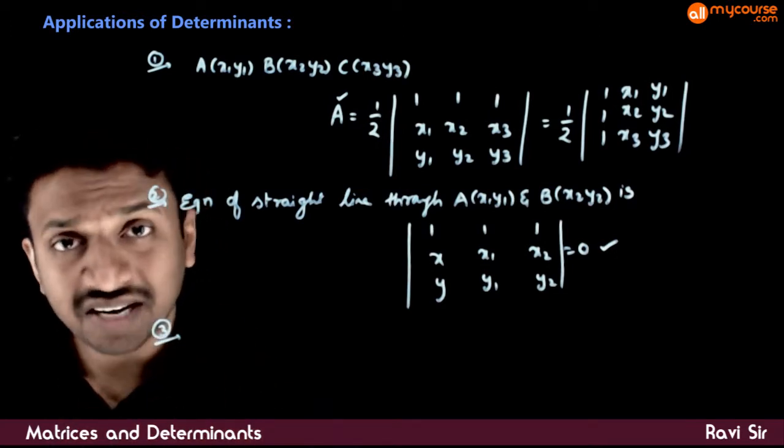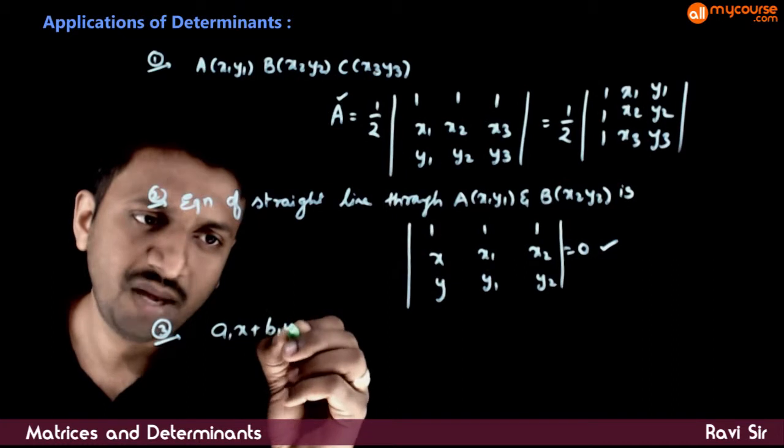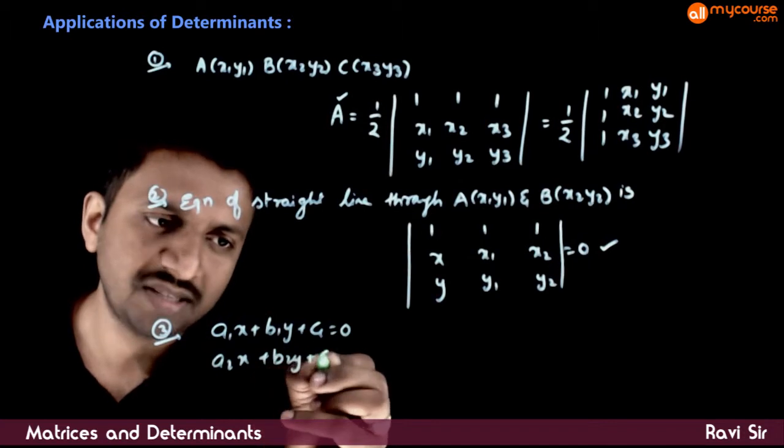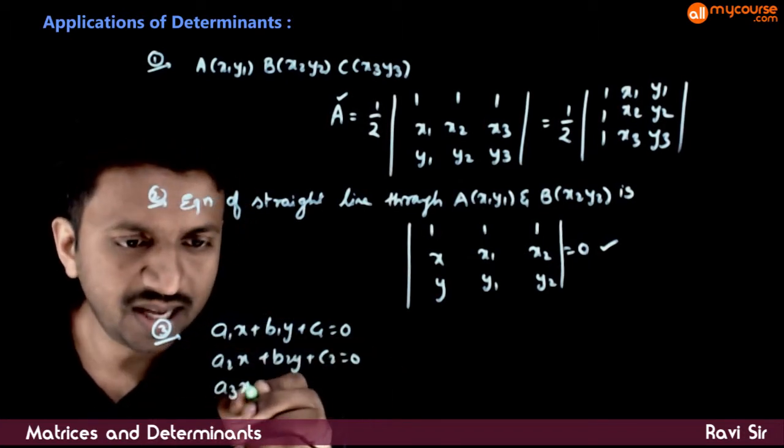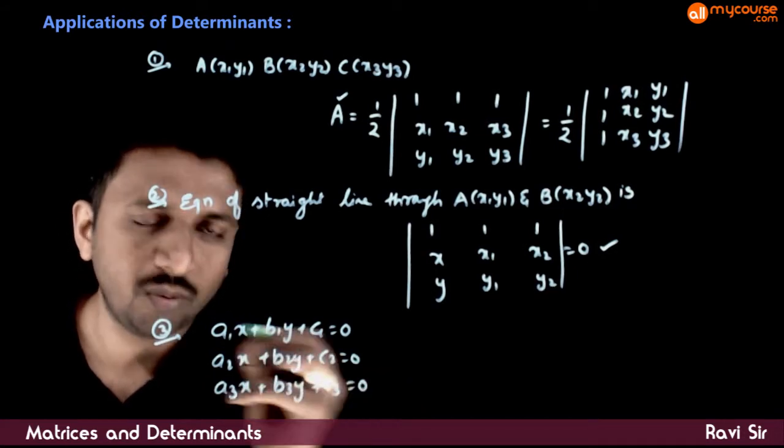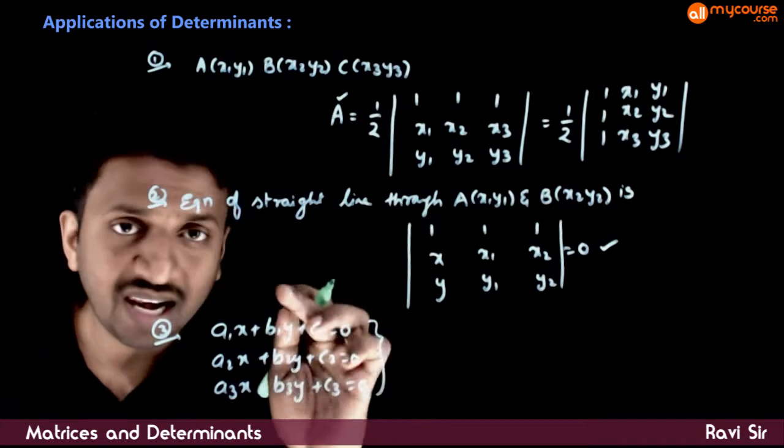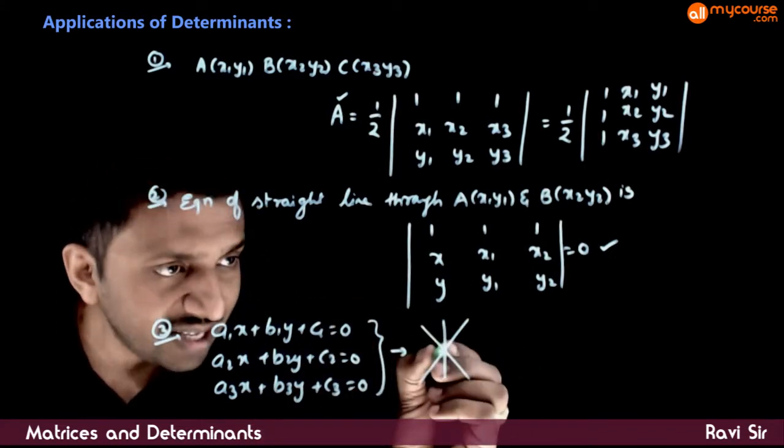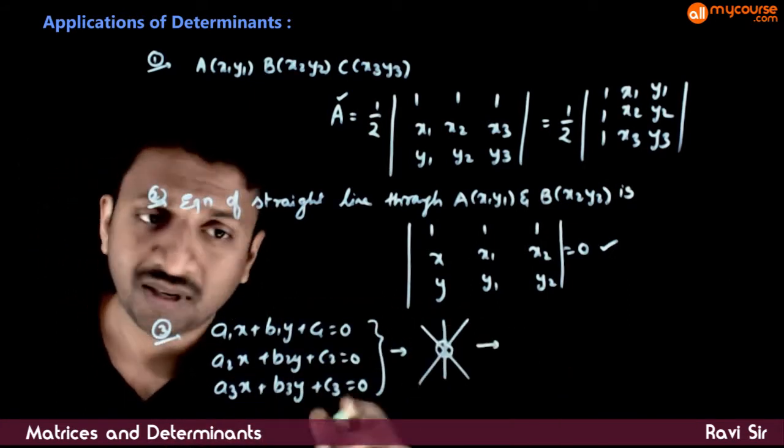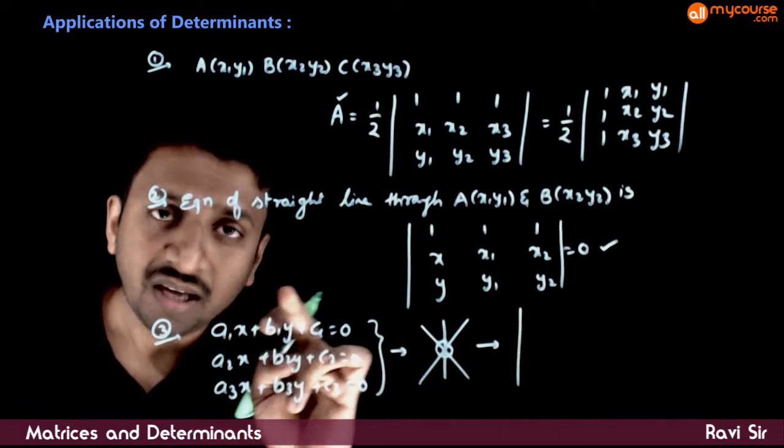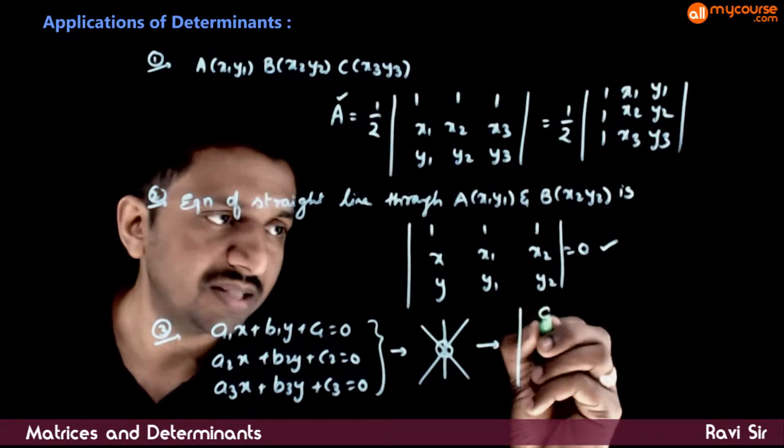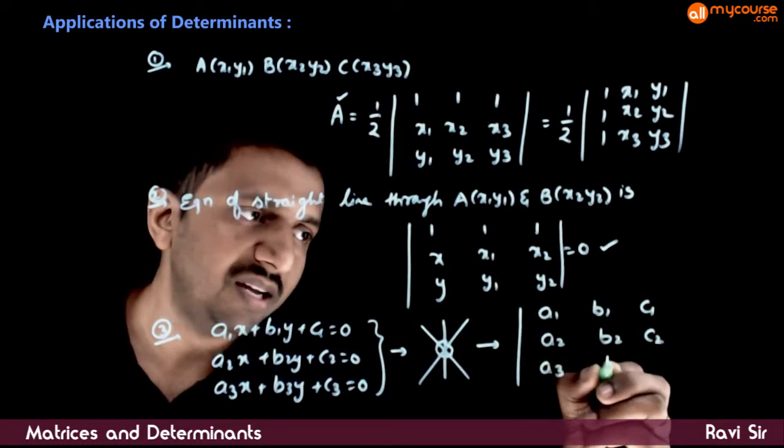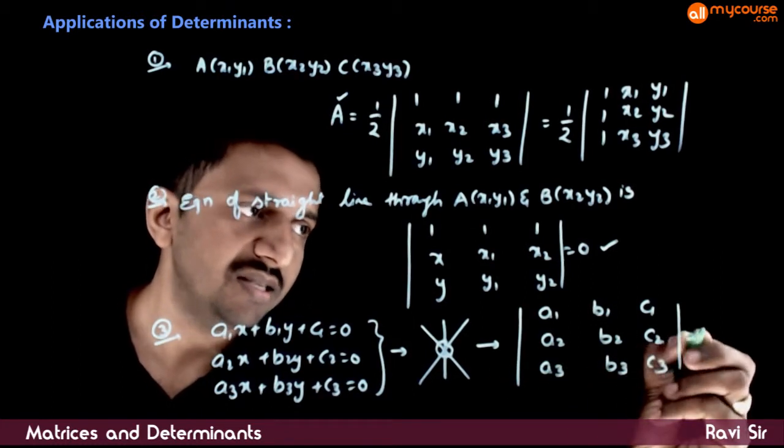Next, if you have three lines: a1x + b1y + c1 = 0, a2x + b2y + c2 = 0, and a3x + b3y + c3 = 0. These three lines will be concurrent, that is, they will meet at a single point, if the determinant formed by the coefficients equals 0. The determinant with rows (a1,b1,c1), (a2,b2,c2), and (a3,b3,c3) equals 0.